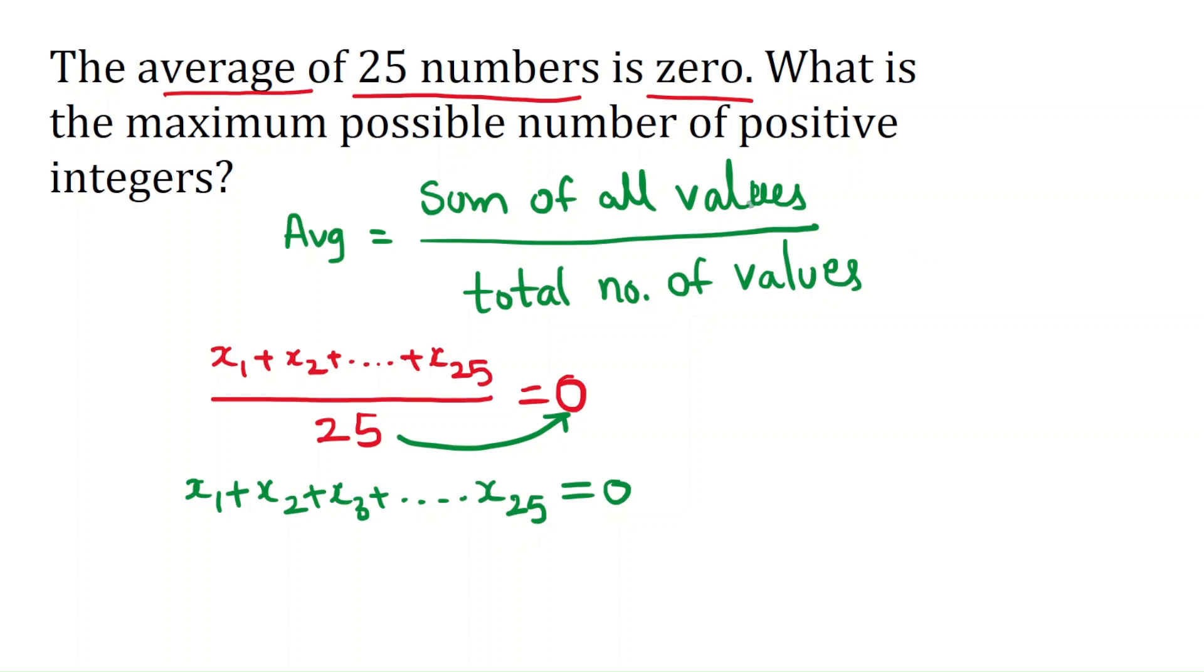They are asking the maximum possible number of positive integers. Whatever numbers they had taken can be positive and negative numbers. So if I take the first 24 numbers as positive,